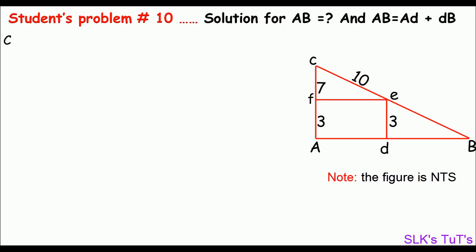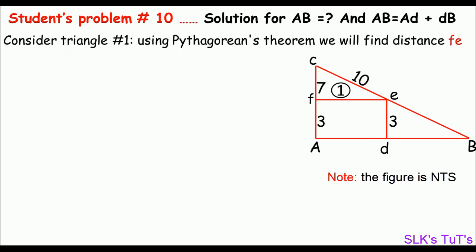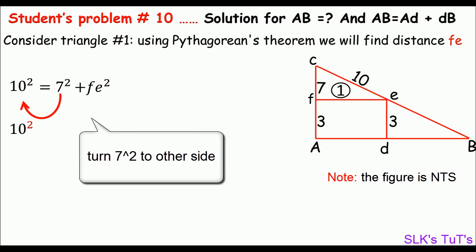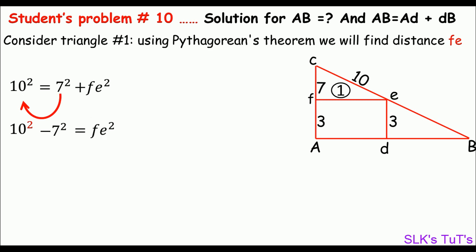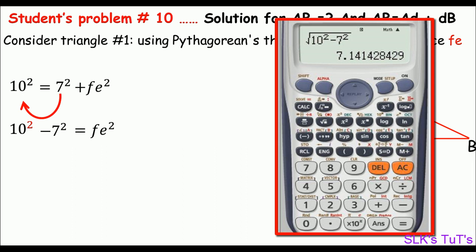Consider triangle 1 from the same figure. Using Pythagorean's theorem, we can calculate FE, which is AD. So 10 squared, which is the longest side of this triangle, should equal 7 squared plus FE squared. We can say 10 squared minus 7 squared equals FE squared. By short math, we get FE is 7.141 meters.